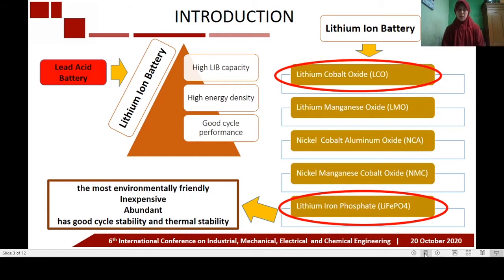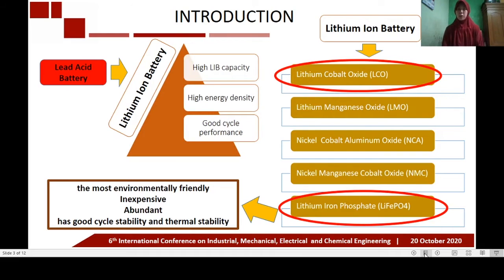Several types of lithium-ion battery cathodes are LCO, LMO, NCA, NMC, and lithium iron phosphate. The first commercially available cathode material is LCO, but LCO has a highly toxic nature, high cost, thermal instability, and limited cobalt resources. So the research looks for alternative cathode materials to meet the requirement of high energy density at low cost.